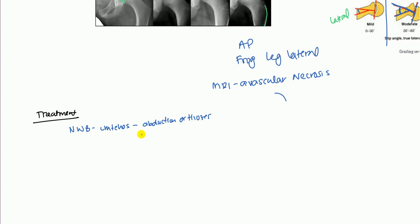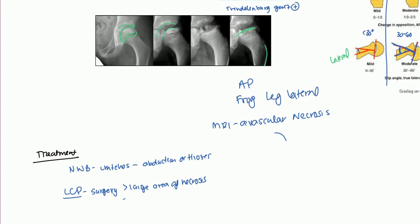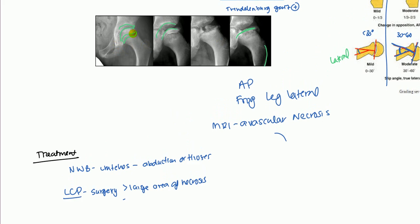Also, there are some surgical options. For the LCP, you're going to want to do surgery if there's a very large area of necrosis. Also, you want to do it if these conservative measures aren't working, and basically what they'll do in these surgeries is they'll put the femoral head back on in both of these types of surgeries.